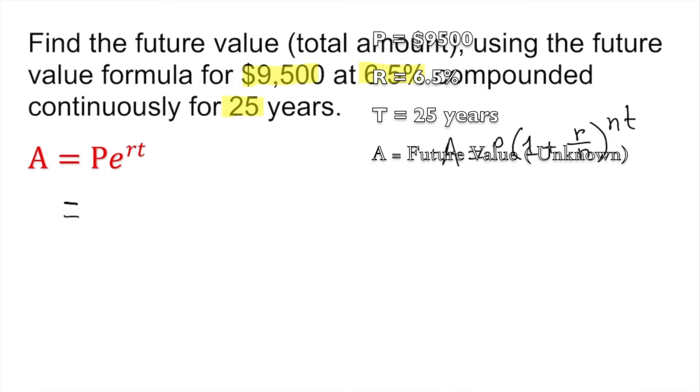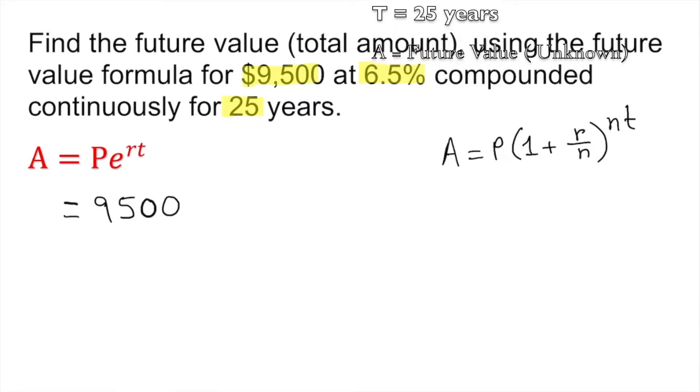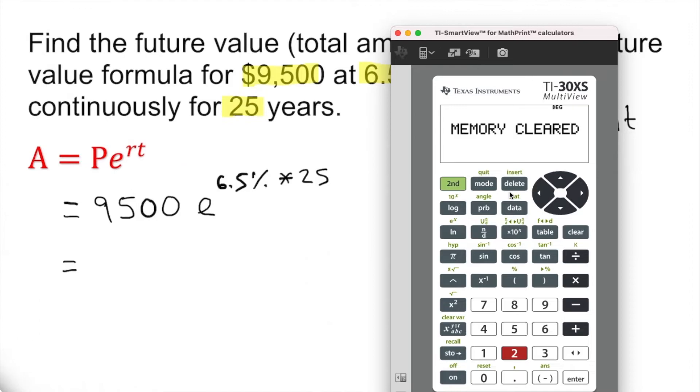So we have P, which is $9,500, times e to the power r, which in this case is 6.5%, times the year, which is 25 years. This calculator is beautiful.